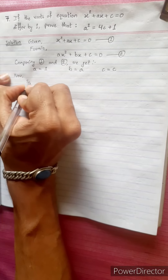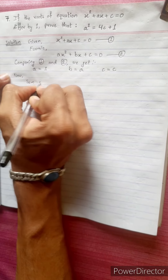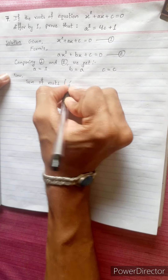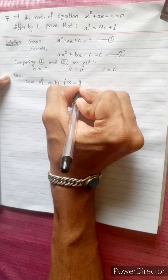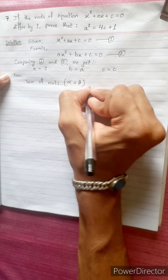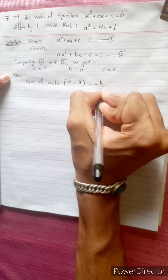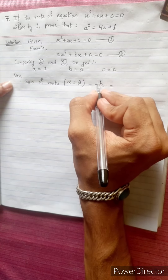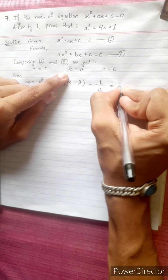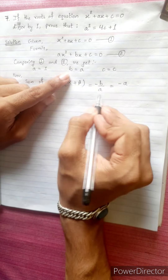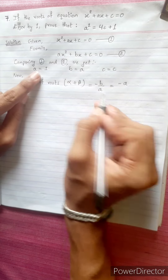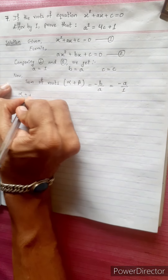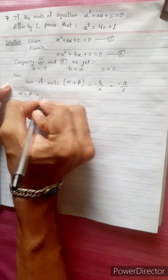Now, the sum of roots: alpha plus beta. Using the formula, alpha plus beta = -B/A. Since B = A and A = 1, this gives us alpha plus beta = -A/1, so alpha plus beta equals minus A.